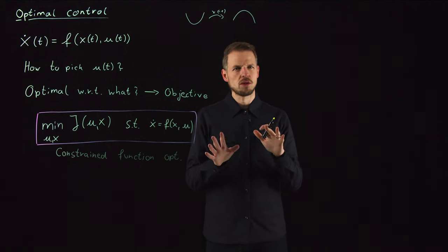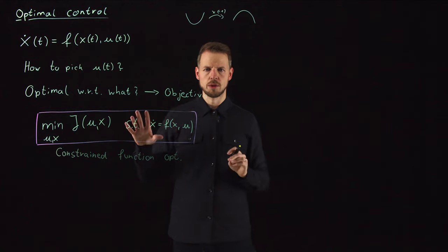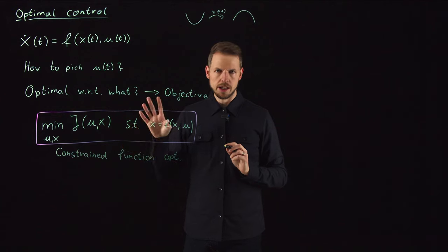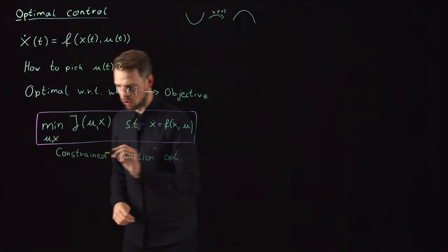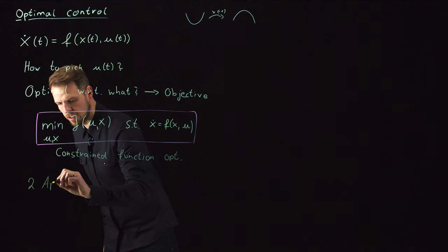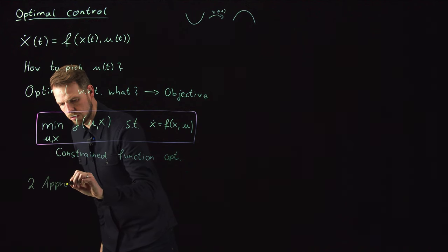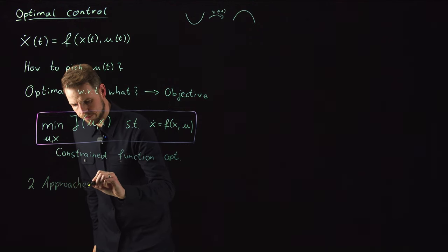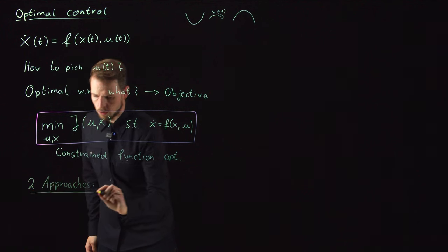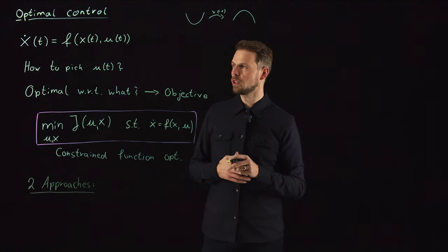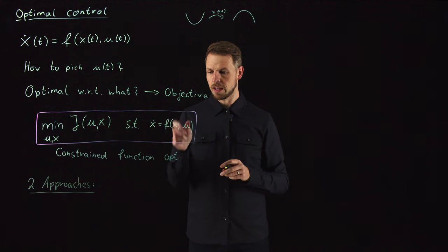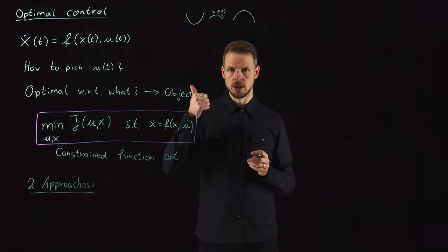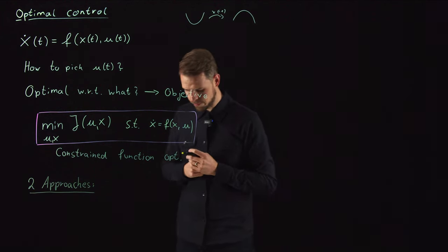There are various ways to do this. Let me briefly mention two approaches—it's basically a matter of ordering the two steps that are necessary. We need discretization in time, and we need to solve an optimization problem. So we have the optimize step and the discretize step.